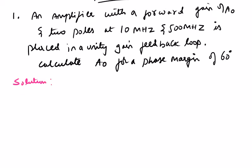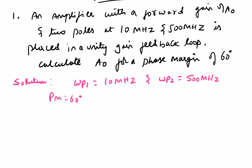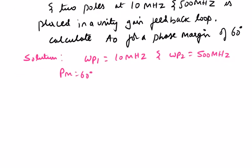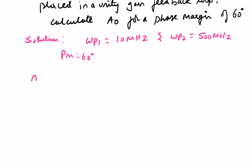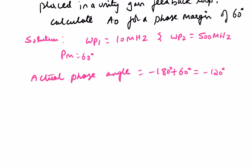There are two poles: ωP1 is equal to 10 MHz and ωP2 is equal to 500 MHz. The phase margin is given as 60 degrees. I have to calculate what A₀ is for a phase margin of 60 degrees. Since phase margin is 60°, the actual phase angle is equal to 120 degrees.